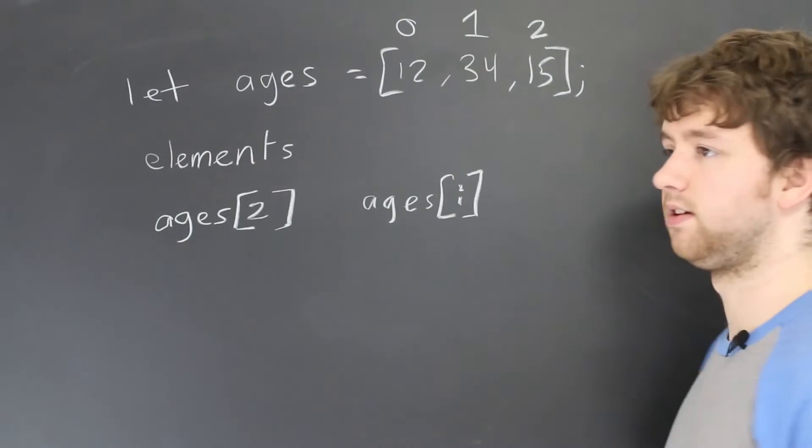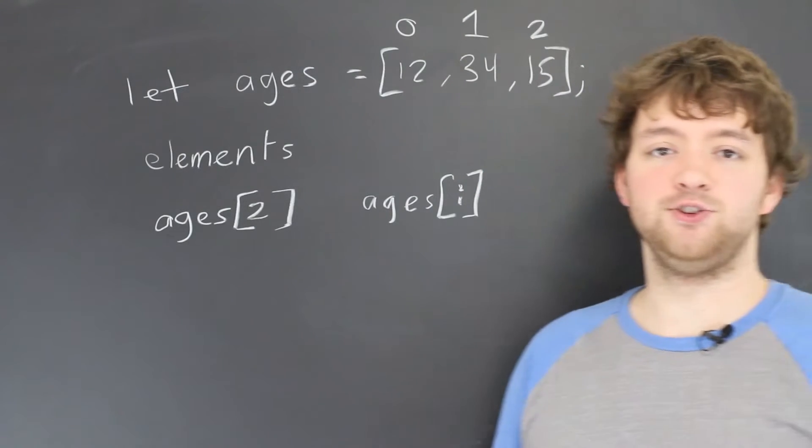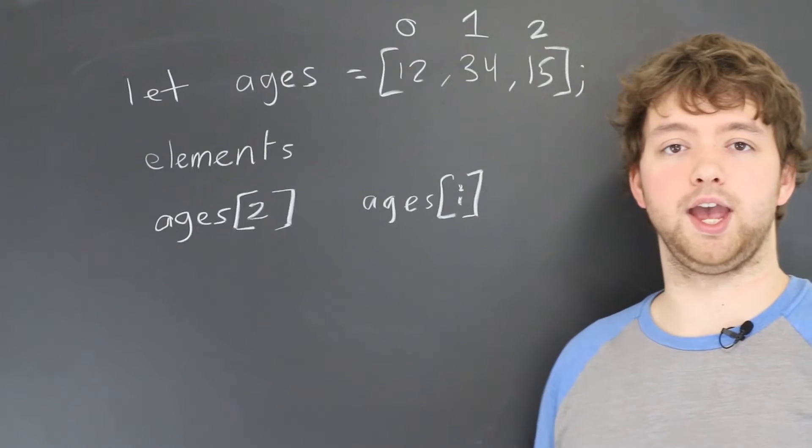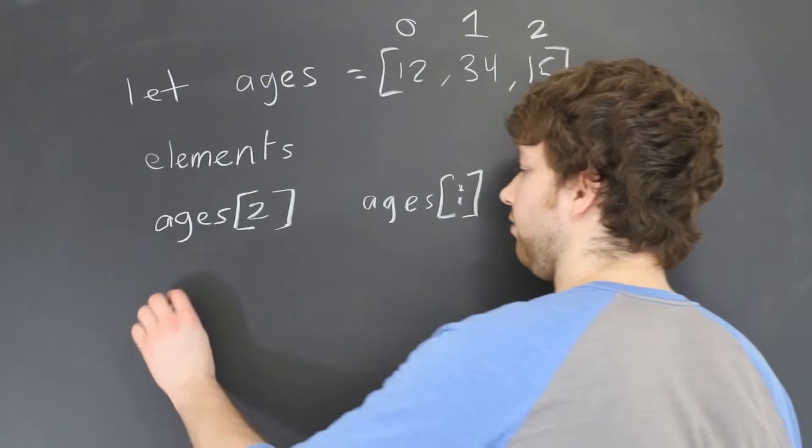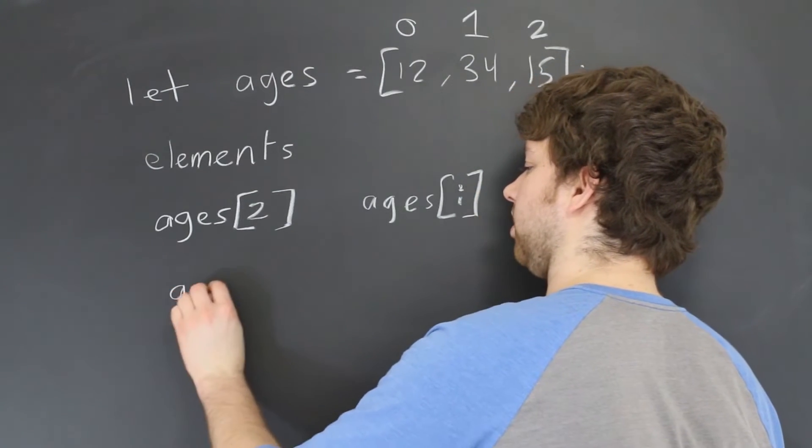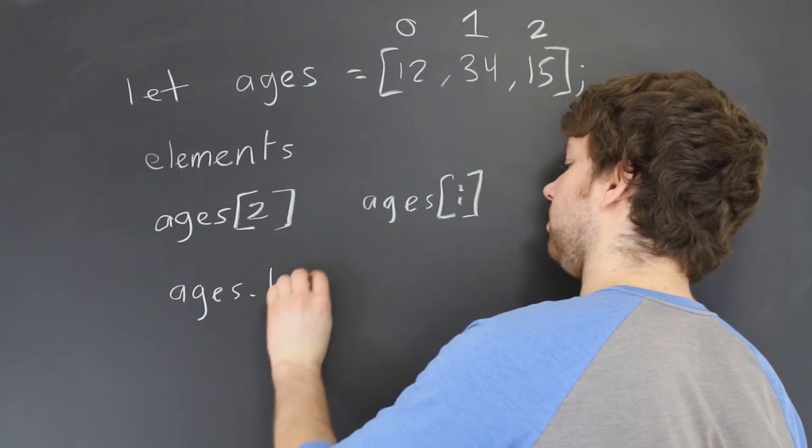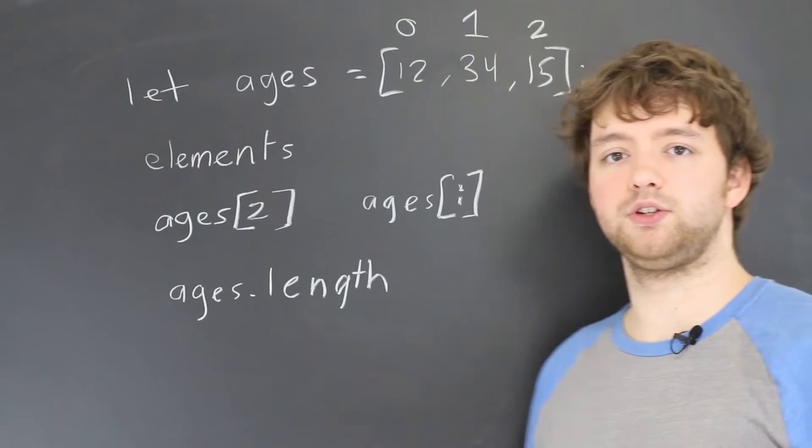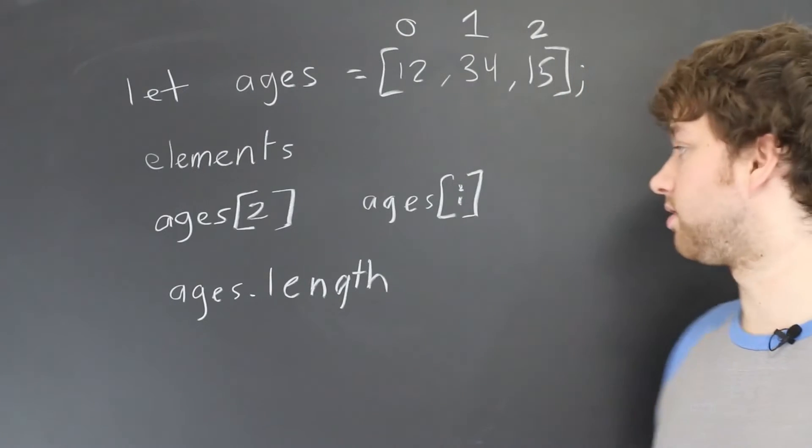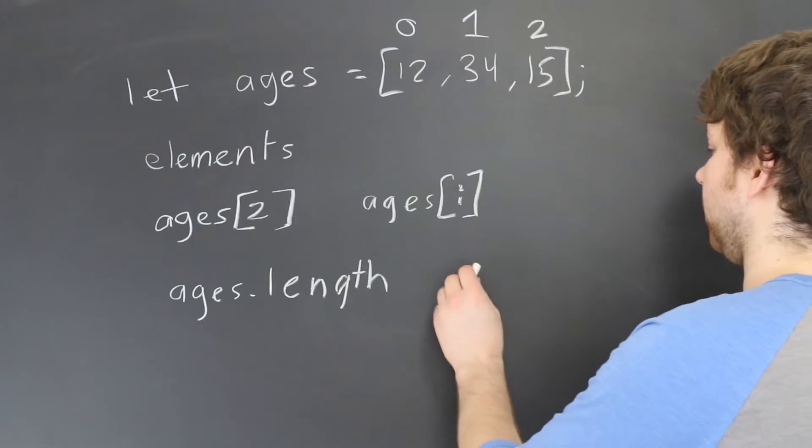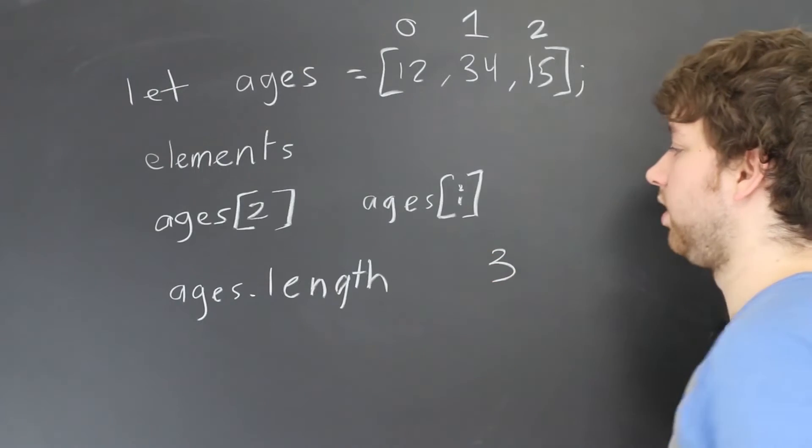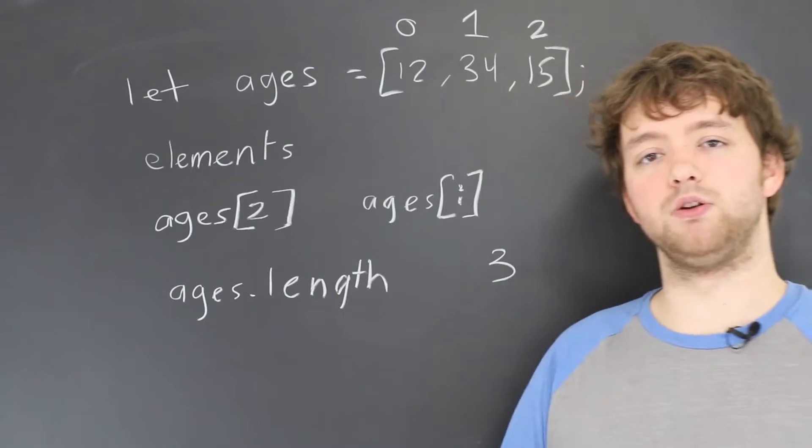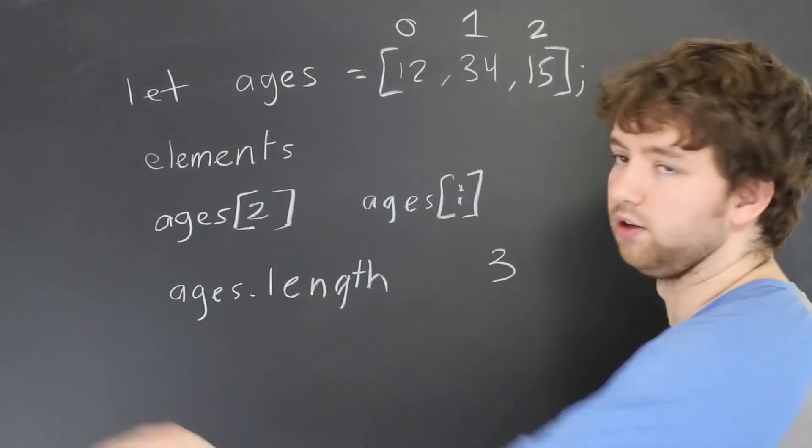Now there's another thing with arrays you need to understand, and that is the array length. If we do ages.length, this is a property, and what this is going to do is tell us how long the array is. In this situation it would give us 3.